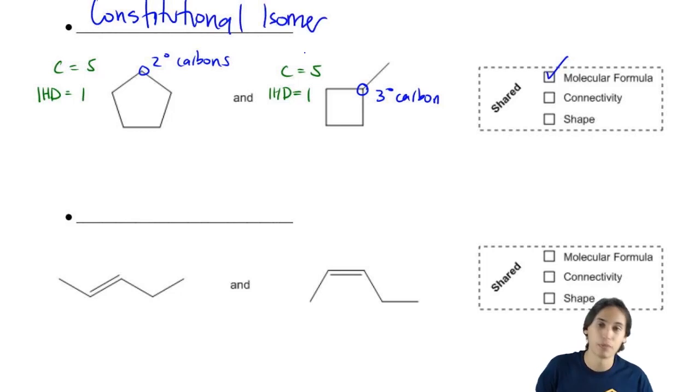Just looking back, remember that a constitutional isomer would be something that has the same molecular formula but different connectivity and obviously a different shape if it's not even connected the same.